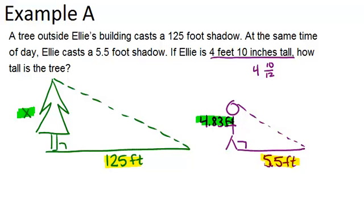Our equation is going to be x over 125 equals 4.83 over 5.5. That's just one way you could set up the equation. There are other equations that are equivalent that will get you the same answer. But this works because the 125 and 5.5 match. They're both the shadow lengths and x and 4.83 match as well.